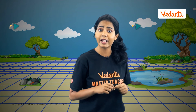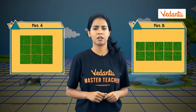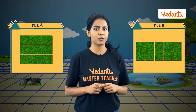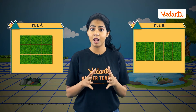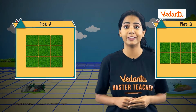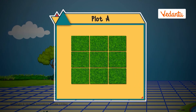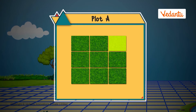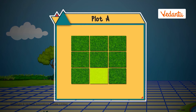Here, two citizens have a disagreement because they can't decide which plot is larger. Can we help them solve this? Let's count the number of boxes in the first plot: one, two, three, four, five, six, seven, eight, and nine.